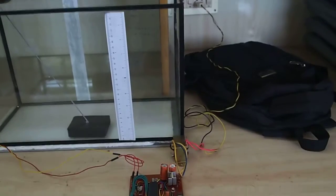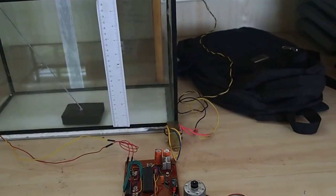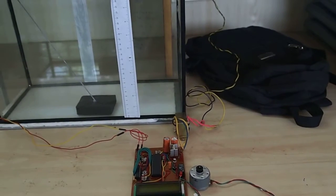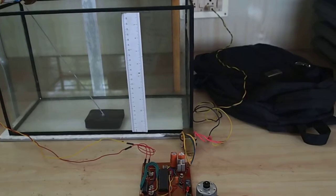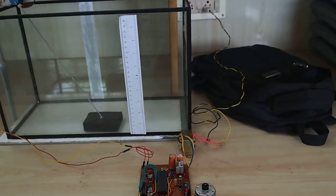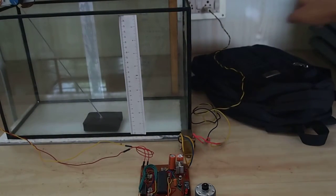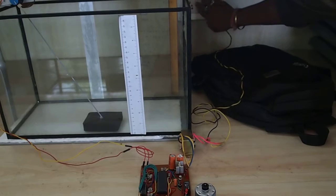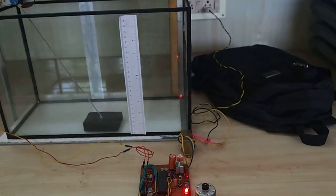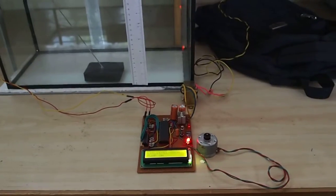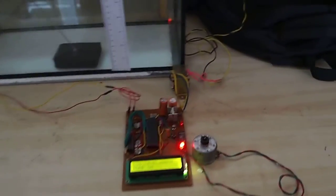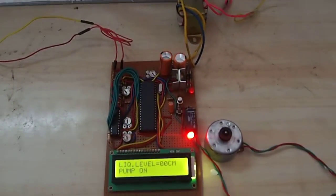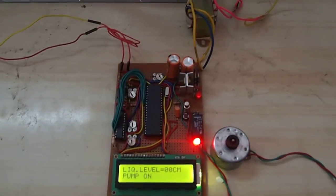This is the circuit. Now we will switch on the circuit. The current flow is on. The water level is zero.